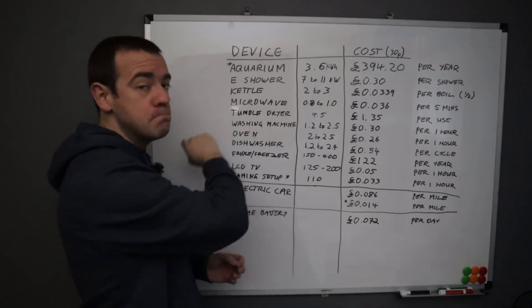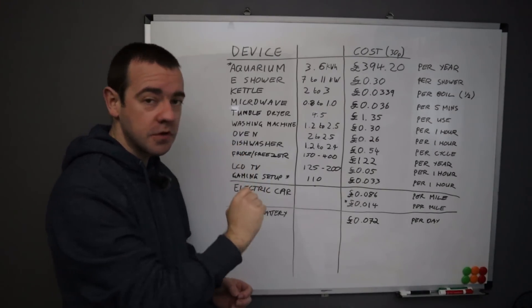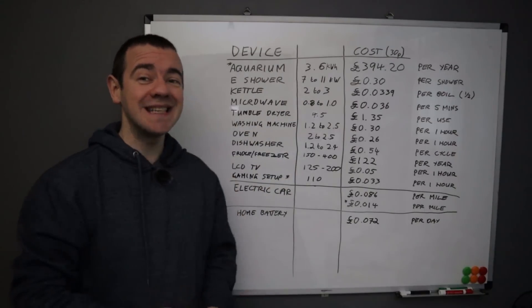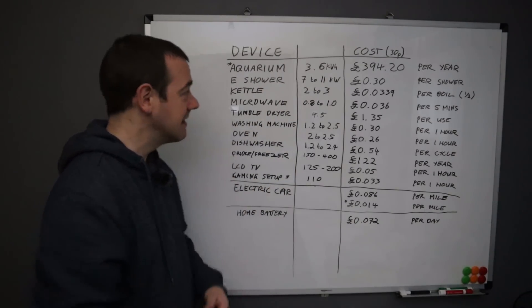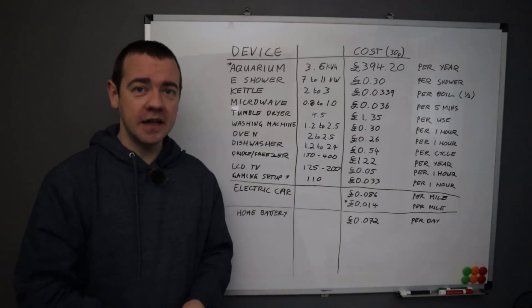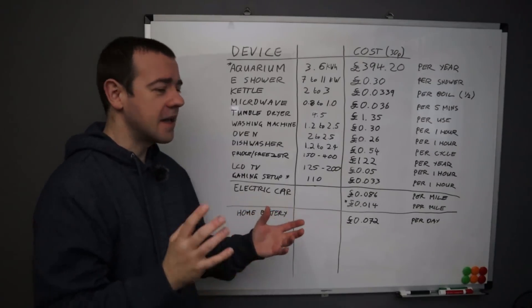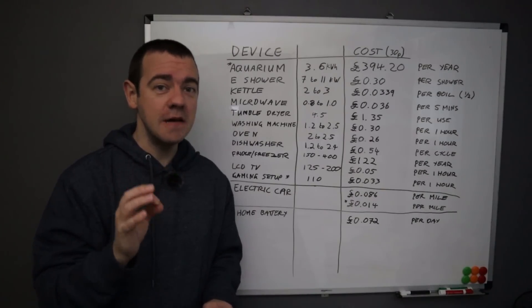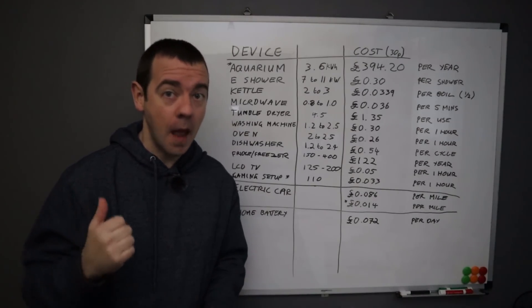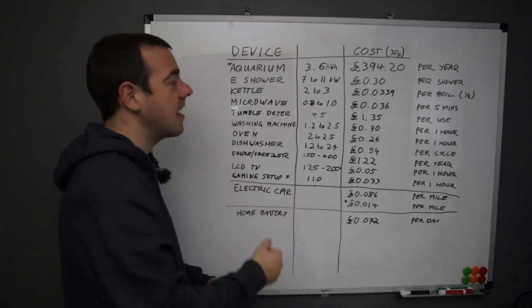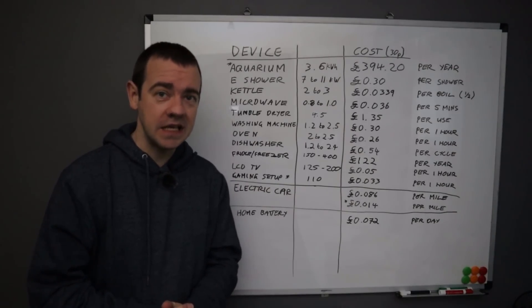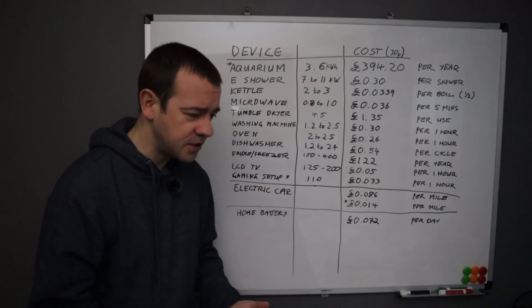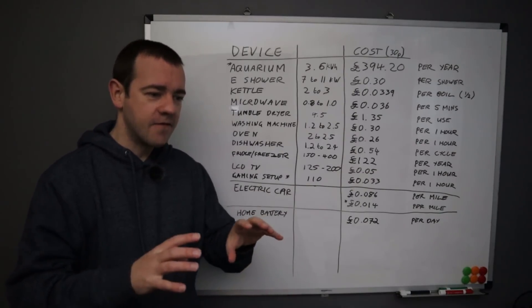Aquarium. The reason there's an asterisk here is because this isn't how much an aquarium will cost you, this is how much my beast is currently costing me if I was on the 30 pence tariff. It uses 3.6 kilowatt hours per day. That's why I'm so kind of like, what? Because ultimately, if I put that into context, that's the equivalent of driving 12, maybe 13 miles in the Tesla per day, every day of the year.